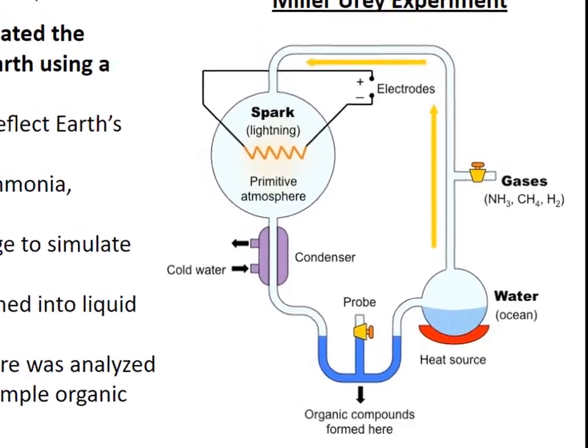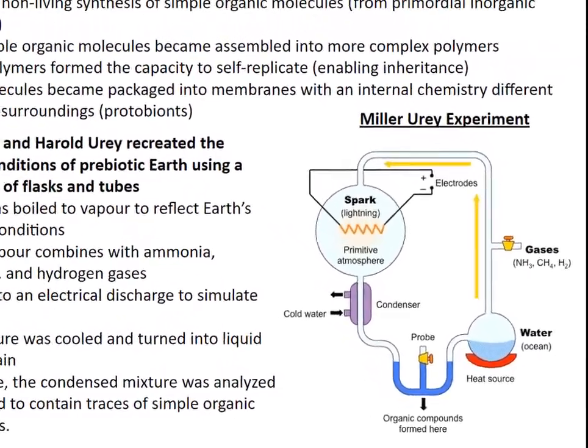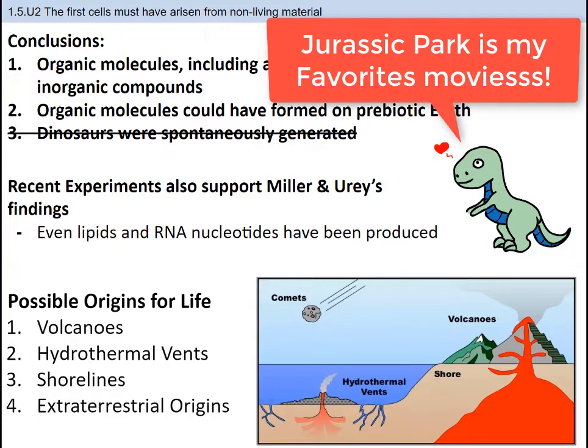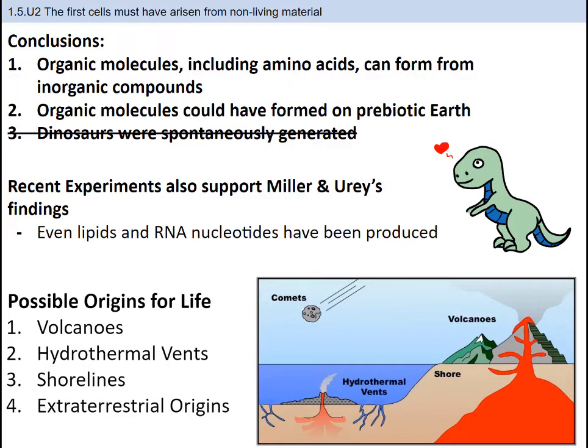Now that your mind is blown, here were the conclusions on the Miller-Urey experiment. First, Miller and Urey concluded that organic molecules, including amino acids, can form from inorganic molecules. Second, they concluded that on prebiotic Earth, organic molecules would be able to form. Even after Miller and Urey's experiments, scientists who have reproduced it have been able to generate lipids and RNA nucleotides.